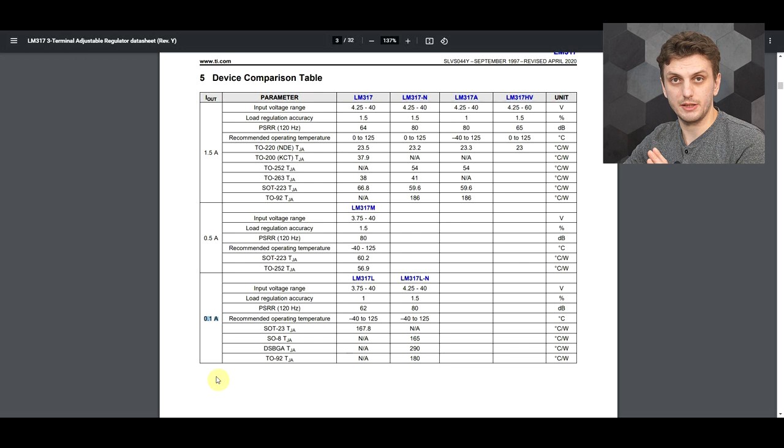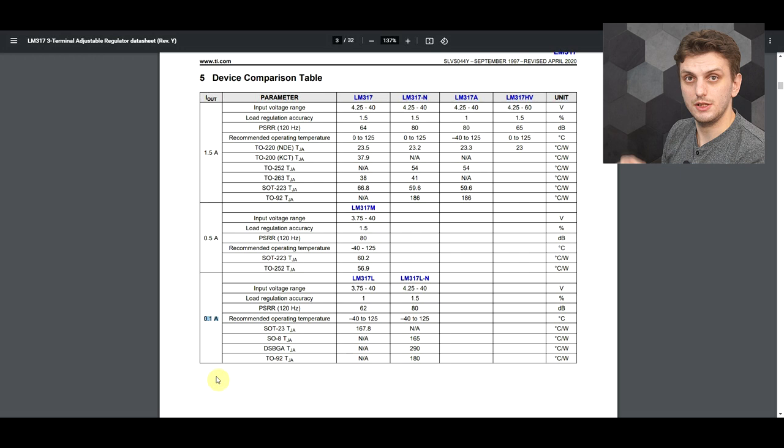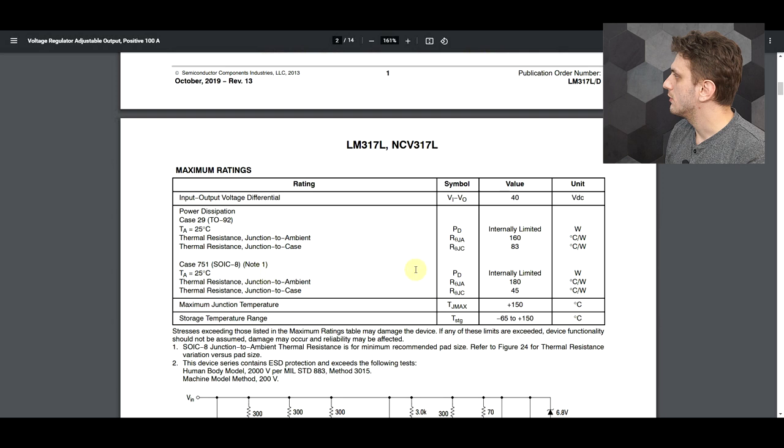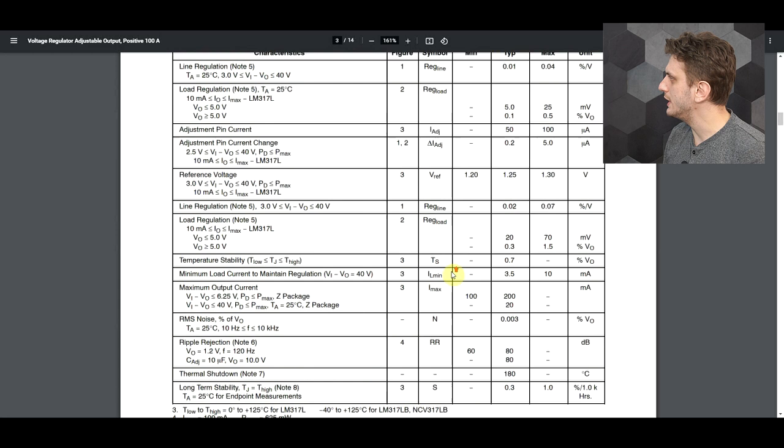The second feature we're interested in is the overtemperature protection. You can't find too much about it in this datasheet, but in a different datasheet, the one made by OnSemi, we can see that the maximum junction temperature is 150 degrees Celsius. If we go through the datasheet and get to the thermal shutdown feature, it's set at 180 degrees Celsius, just slightly above our maximum junction temperature.